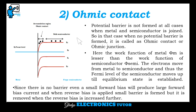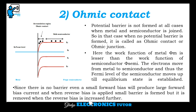Next is ohmic contact. A potential barrier is not formed in all cases when metal and semiconductor are joined. When no potential barrier is formed, it is called ohmic contact or ohmic junction. Here, the work function of metal φ_m is lesser than the work function of the semiconductor. The electrons move from metal to semiconductor, and the Fermi level of the semiconductor moves up until equilibrium is formed. Since there is no barrier, even a small forward bias will produce a large forward bias current, and when reverse bias is applied, a small barrier is formed but it is removed when reverse bias is increased further.